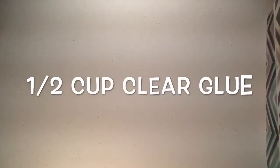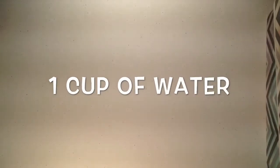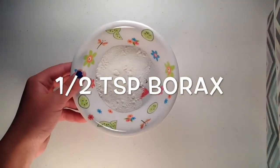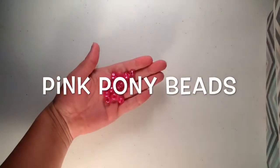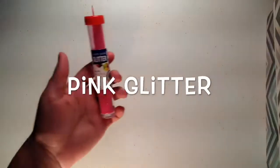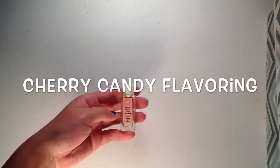So for this slime, you're going to need a half a cup of glue, a cup of water, some neon pink food coloring, a half a teaspoon of borax, some green string, solid pink pony beads and clear pink pony beads, some pink glitter, and some cherry candy flavoring.